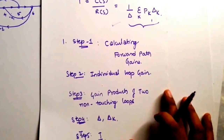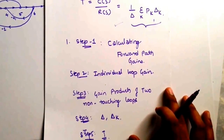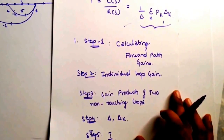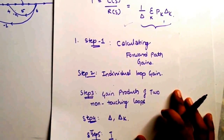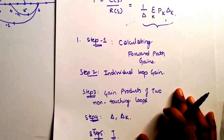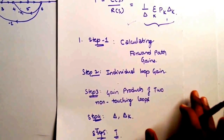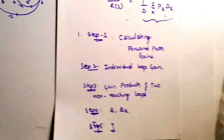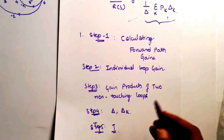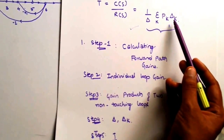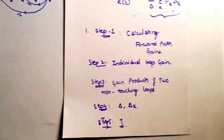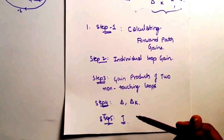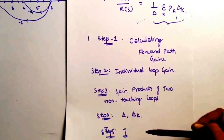To summarize: step one is calculating the number of forward paths and the gain of each. Step two is identifying how many individual loops are in the signal flow graph and calculating the gain of each. Step three is finding non-touching loop pairs and computing the products of their gains. Step four is calculating delta and delta_k — which can range from delta_1 up to delta_5 or more. Step five is combining all terms to get the transfer function.